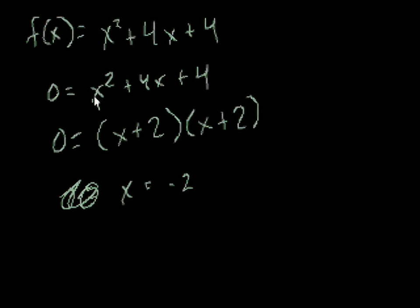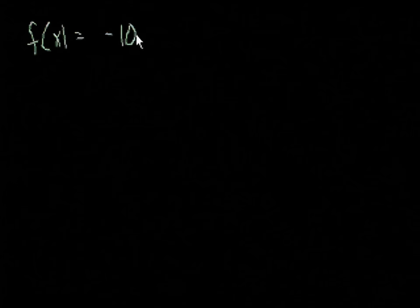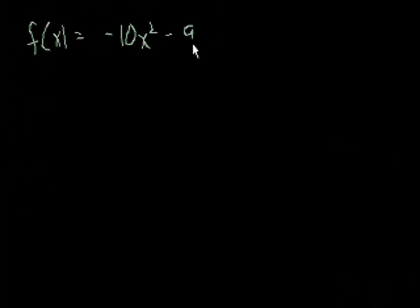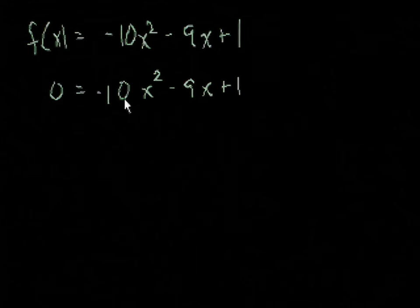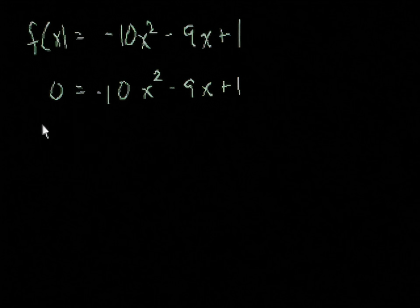Now we know how to find the zeros when the equation is easy to factor. But let's consider a situation where it's not so easy. Say we had f of x equal to negative 10x squared minus 9x plus 1. Even dividing by 10 would give fractions, making it very hard to factor. That's why we use the quadratic equation — we want to find what x values make this equal to 0.